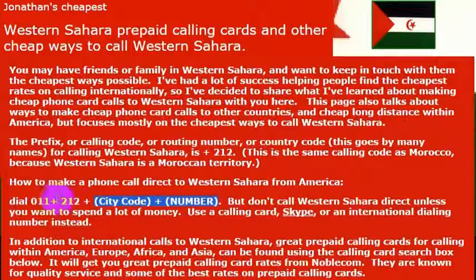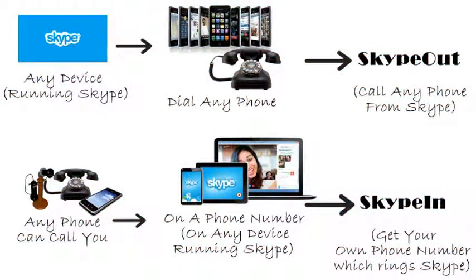Again, if you're going to call Western Sahara you need the country code, which is 212, but I wouldn't really recommend calling direct — your phone company will charge you a lot of money. If you want to call a phone number, I really recommend using Skype. We detail how to make free and low-cost calls using Skype in other videos.